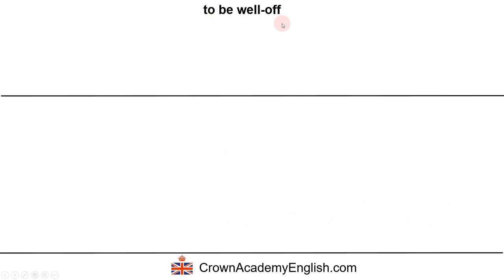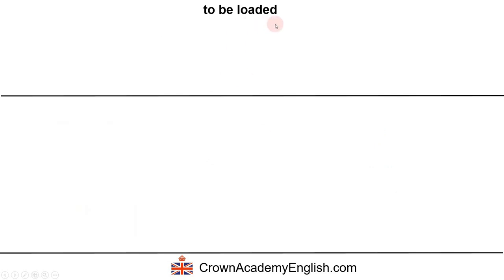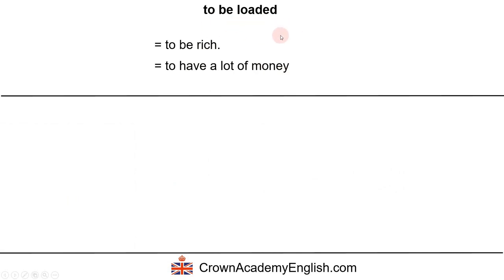The next expression is 'to be well-off' — notice there's a hyphen when we write it. It means to be rich or to have a lot of money. For example: John has a good job and he's very well-off, meaning he's very rich. Another expression with the same meaning is 'to be loaded,' which also means to be rich and to have a lot of money.